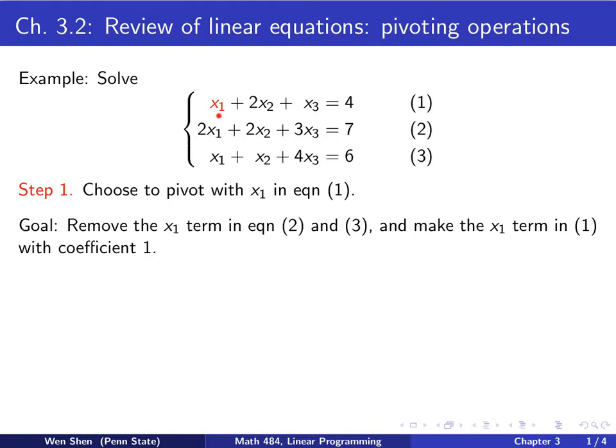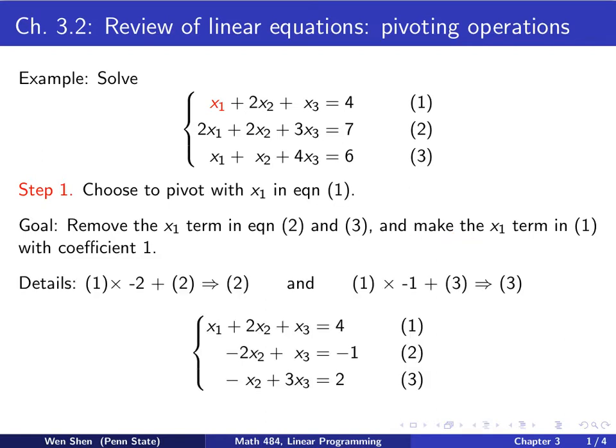You have noticed that I put this term x1 in red. It's because I want to pivot with x1 in equation 1, meaning this term here. So the goal of the pivoting process is the following: I want to remove the x1 terms in the other equations. So if I pivot here in equation 1, then I want to do the manipulation such that in equation 2 and in equation 3, the term x1 should be gone, basically with zero coefficient. And also, I want to make this term, the x1 that you are pivoting in this equation, with coefficient 1. So that's the goal. There are two goals: remove it in the other equations and make the coefficient 1 in the equation you are pivoting.